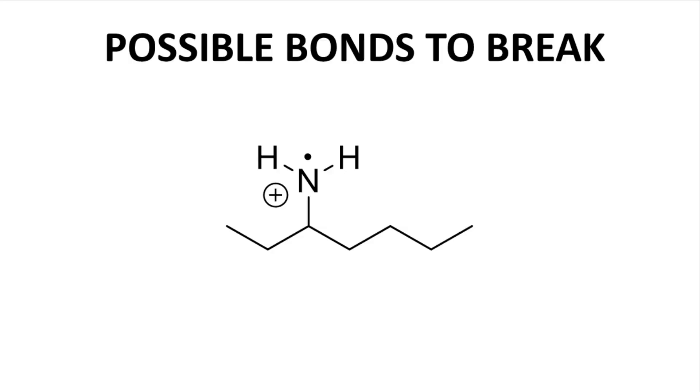Here again is the parent ion. Let's specifically label the bonds that might break. We mentioned bonds to the nitrogen. That could be the CN bond, bond A.